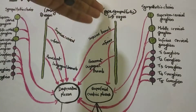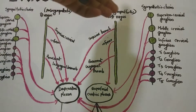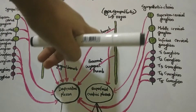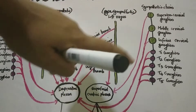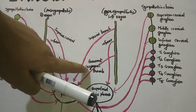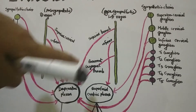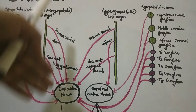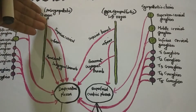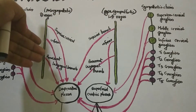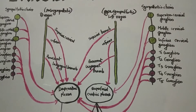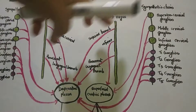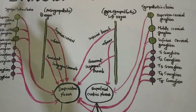The parasympathetic supply is from the vagus. The left vagus has three branches: the superior cervical branch, the inferior cervical branch, and the recurrent laryngeal branch of the left vagus. The right vagus also has these branches — the superior cervical, inferior cervical, and the recurrent laryngeal branch.